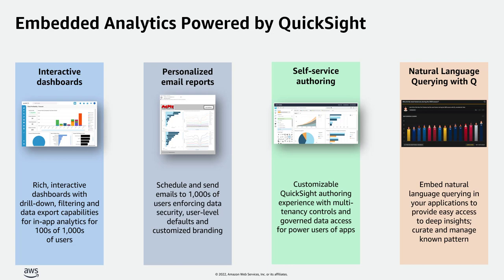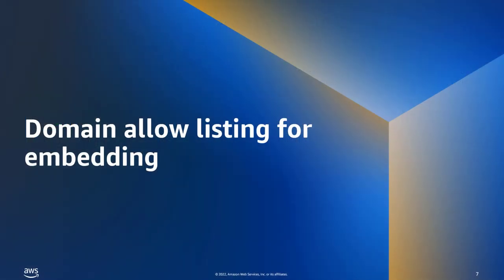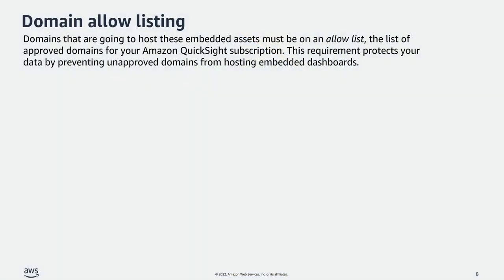Now that we have seen what QuickSight is and what Embedded Analytics powered by QuickSight is, let me talk to you about Domain Allow Listing for Embedding. Embedding is about bringing insights into your application for your end users. Domain Allow Listing is a critical step in this process, because QuickSight wants to make sure that your data embedded through QuickSight dashboards is only being accessed by the domain which you have allowed.